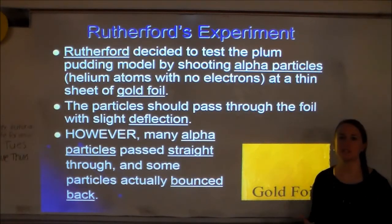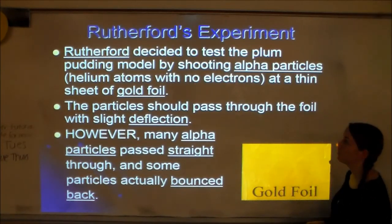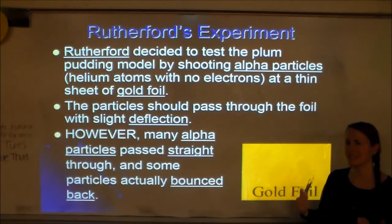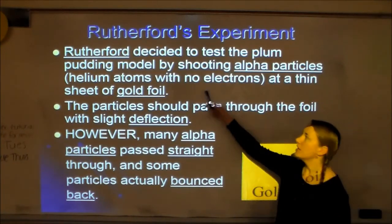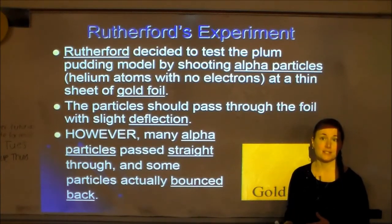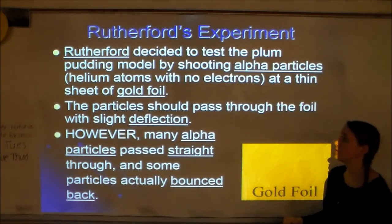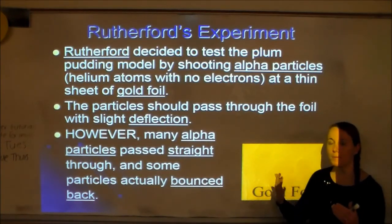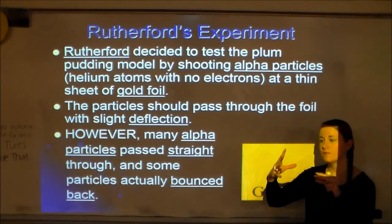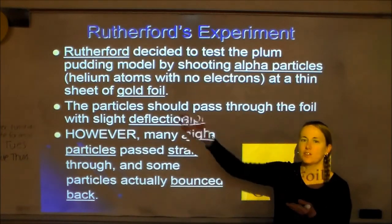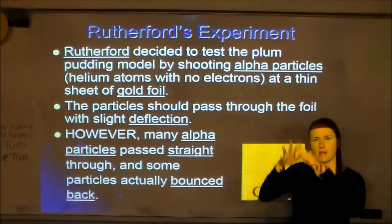So that video showed us the setup and conclusions Rutherford determined. Rutherford decided to test the plum pudding model by shooting alpha particles — helium atoms with no electrons, so they carry a double positive charge — at a thin sheet of gold foil. The particles were expected to pass through the foil with slight deflection. When those double-positive alpha particles hit that positive force field, if the plum pudding model had been correct, they would have bent a little but continued through.